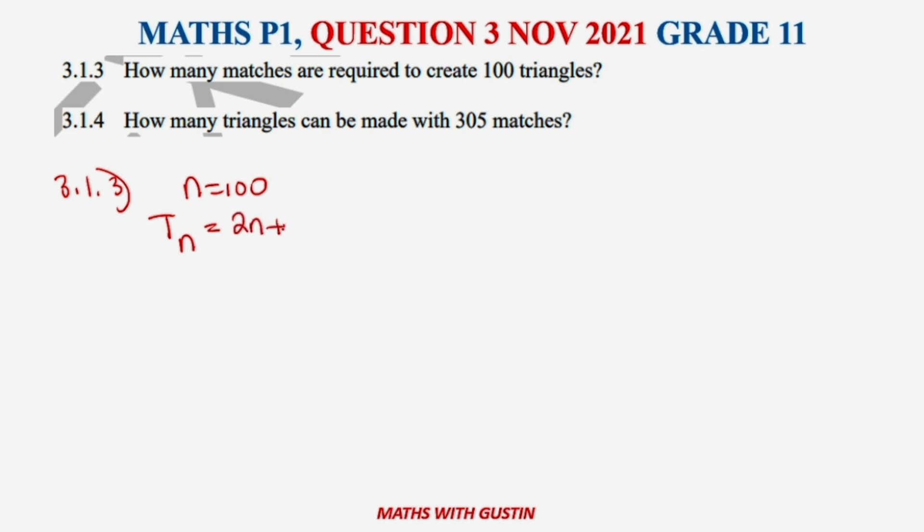How many are required? Our n is going to be 100, so it's going to be 2(100) + 1, which is going to give us 200 + 1, which is going to give us 201.